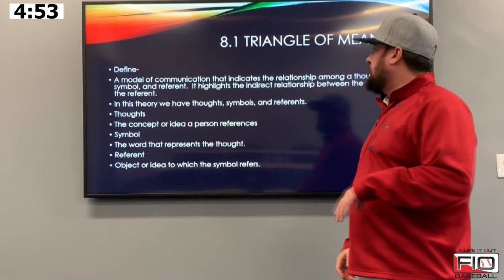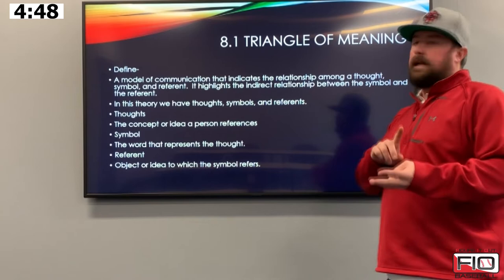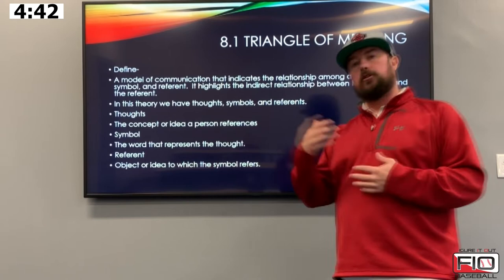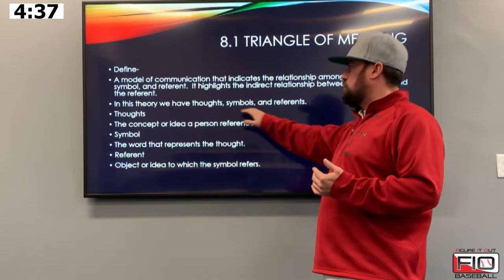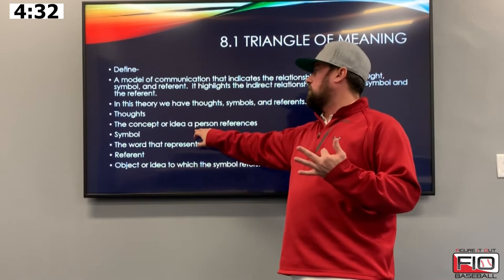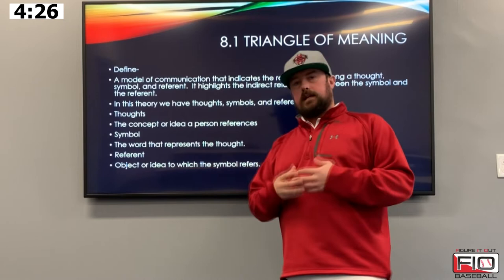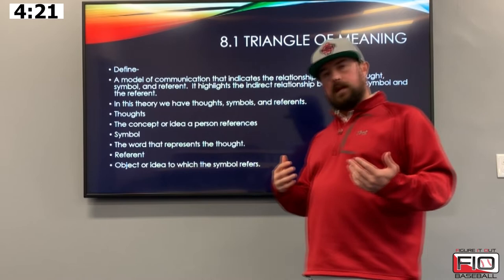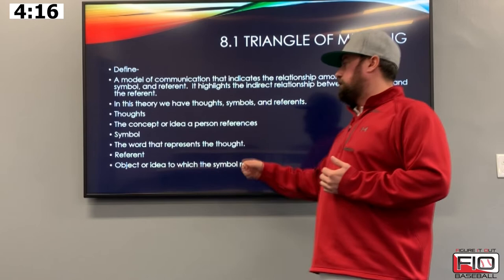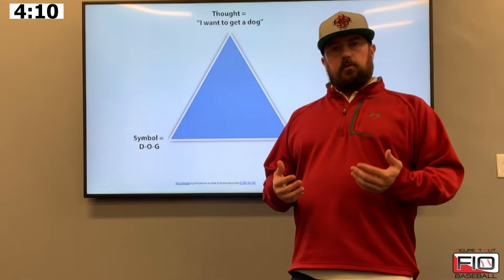The triangle of meaning is a model of communication that indicates the relationship among a thought, a symbol, and a referent. It highlights the indirect relationship between the symbol and the referent. In this theory we have those three things: a thought, a symbol, and a referent. Our thoughts are the concept or idea that we're trying to reference. The symbol is the actual words we use — could be written, could be spoken, or through demonstration, but usually spoken or written. And the referent is the object or idea that we're referring to.